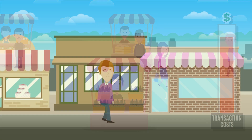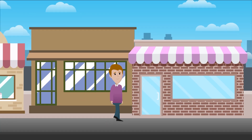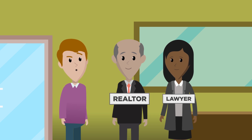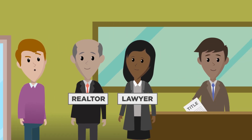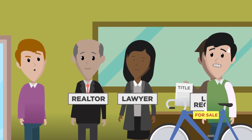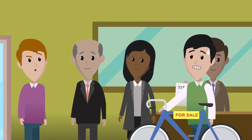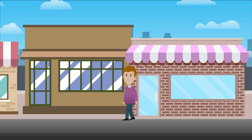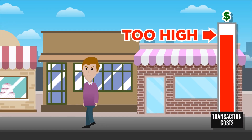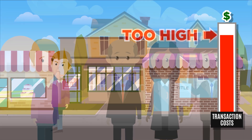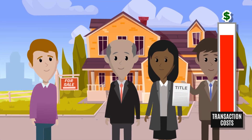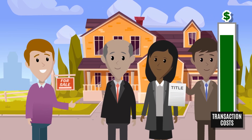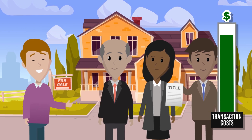For example, imagine if the legal and regulatory steps required to buy a house — hiring a realtor and a lawyer and changing titles with the land registry office and so on — were also required when you bought a bike. No one would ever buy a bike because the transaction costs are too high. However, for a major and costly purchase like a house, the higher transaction costs don't impede exchange.